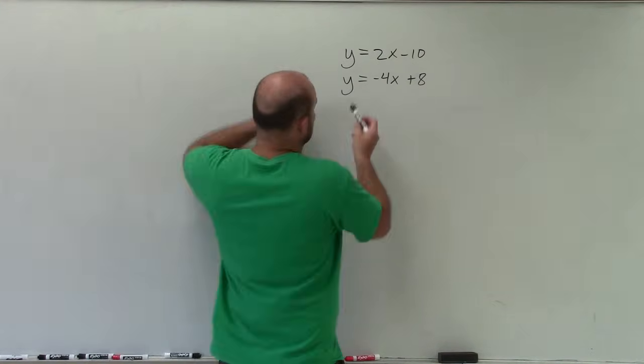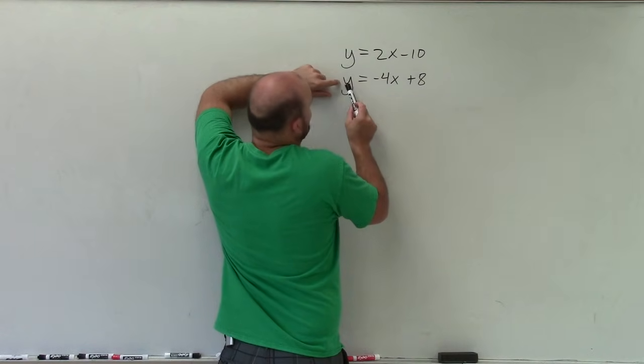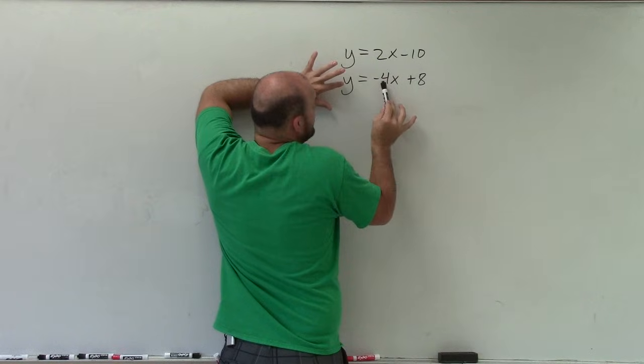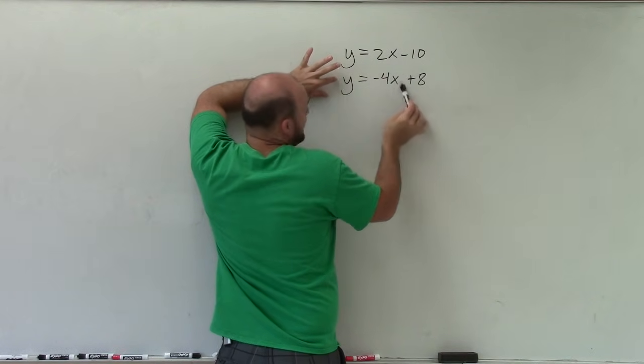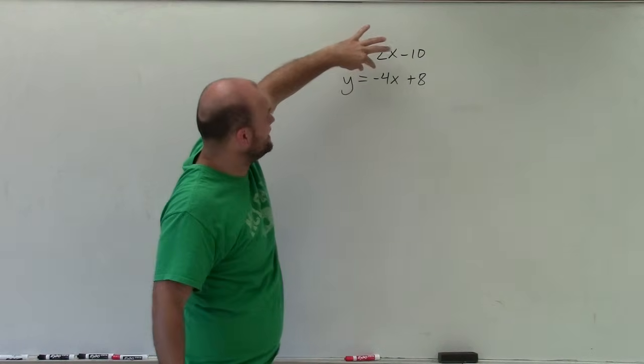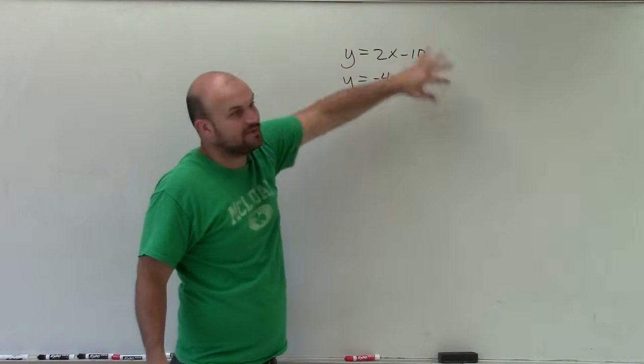So what I'm going to do is notice that since y is equal to, right, that means the value of y is the same as the value of negative 4x plus 8. We don't know the value of y and 4x. That's what we're trying to determine. But we know that the value of y is the same as negative 4x plus 8.